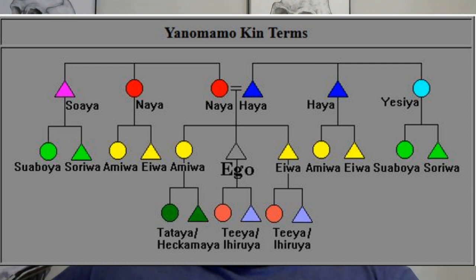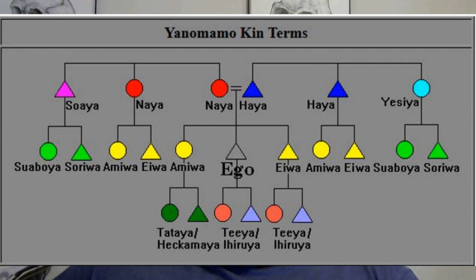If you look at Ego's red circle, indicating his mother, they're named Naya, as well as the mother's sisters, also named Naya. But the pink triangle on the mother's side — the mother's brother is not called Haya like we see with the father's brother, and likewise the father's sister is not referred to as Naya.